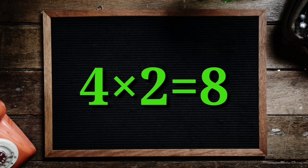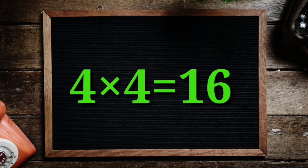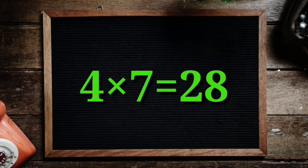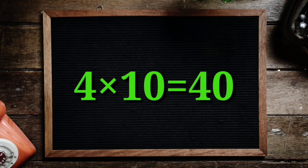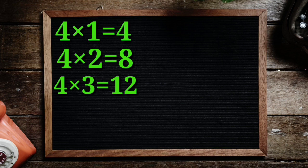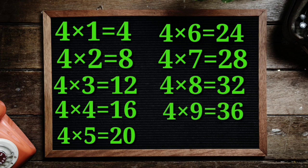4 1's are 4, 4 2's are 8, 4 3's are 12, 4 4's are 16, 4 5's are 20, 4 6's are 24, 4 7's are 28, 4 8's are 32, 4 9's are 36, 4 10's are 40. 4 1's are 4, 4 2's are 8, 4 3's are 12, 4 4's are 16, 4 5's are 20, 4 10's are 40.